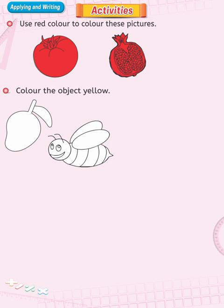Color these objects in yellow. Take yellow color pencil to color the mango and the bee. Be careful to color these objects within the designated space.